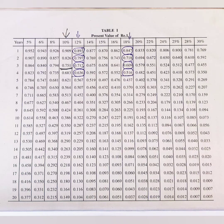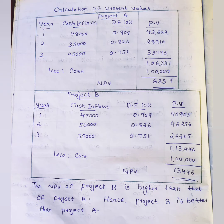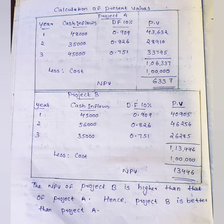Using the 10% discount rate, the present value factors are 0.909, 0.826, and 0.751. We multiply the certain cash inflows by these factors to get the present value of each year's cash flow. Then we total the present values. For Project A, the total present value comes to Rs. 1,06,337.